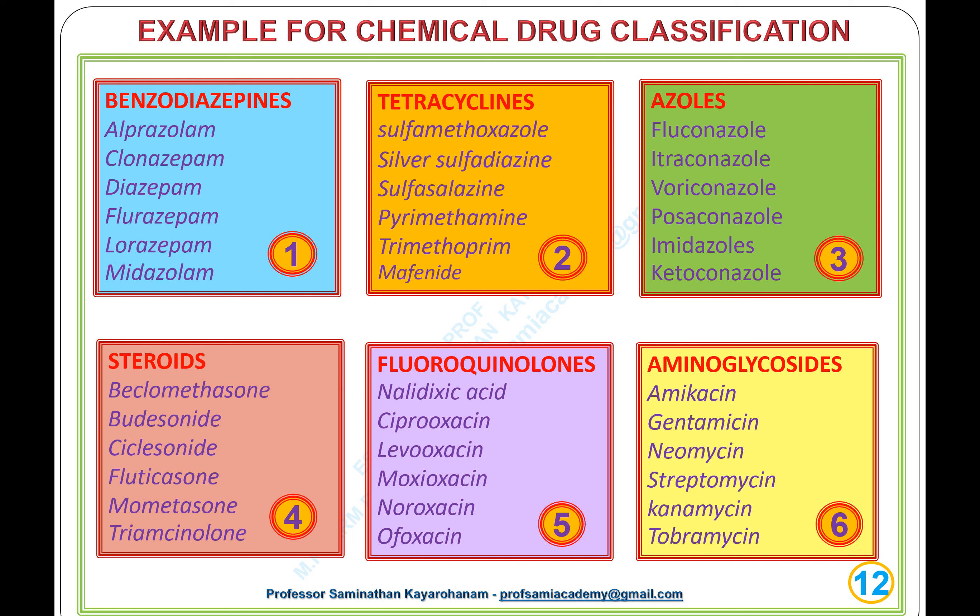Examples of various chemical drug classifications and drug names: 1. Benzodiazepines: alprazolam, clonazepam, diazepam, flurazepam, lorazepam, midazolam. 2. Sulfonamides: sulfamethoxazole, silver sulfadiazine, sulfasalazine, pyrimethamine, trimethoprim, mafenide. 3. Azoles: fluconazole, itraconazole, voriconazole, posaconazole; imidazoles: ketoconazole. 4. Steroids: beclomethasone, budesonide, ciclesonide, fluticasone, mometasone, triamcinolone. 5. Fluoroquinolones: nalidixic acid, ciprofloxacin, levofloxacin, moxifloxacin, norfloxacin, ofloxacin. 6. Aminoglycosides: amikacin, gentamicin, neomycin, streptomycin, kanamycin, tobramycin.